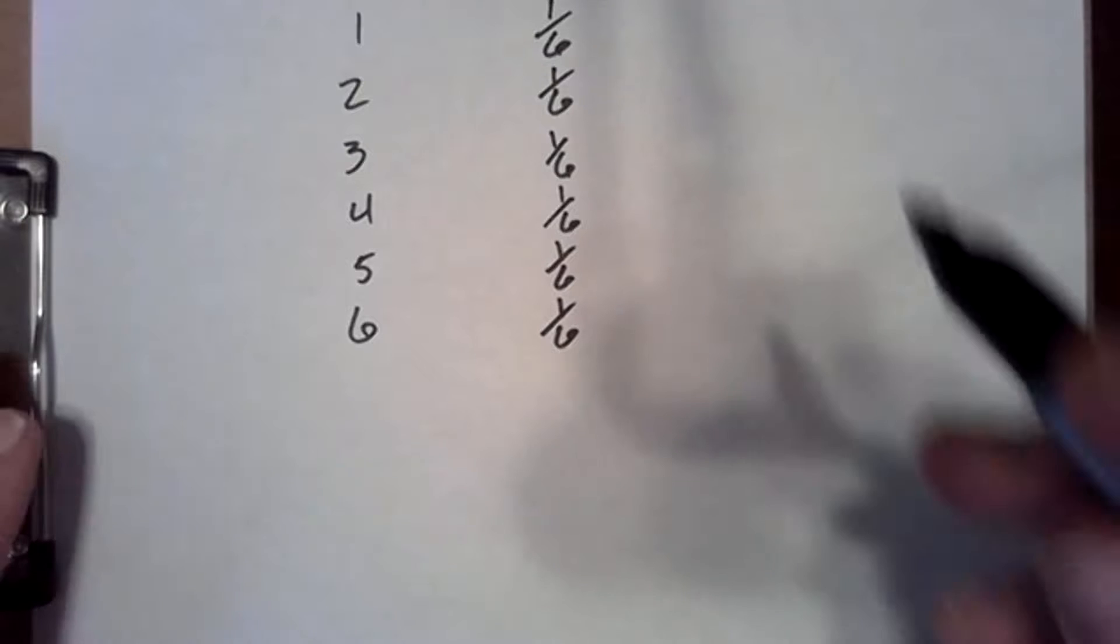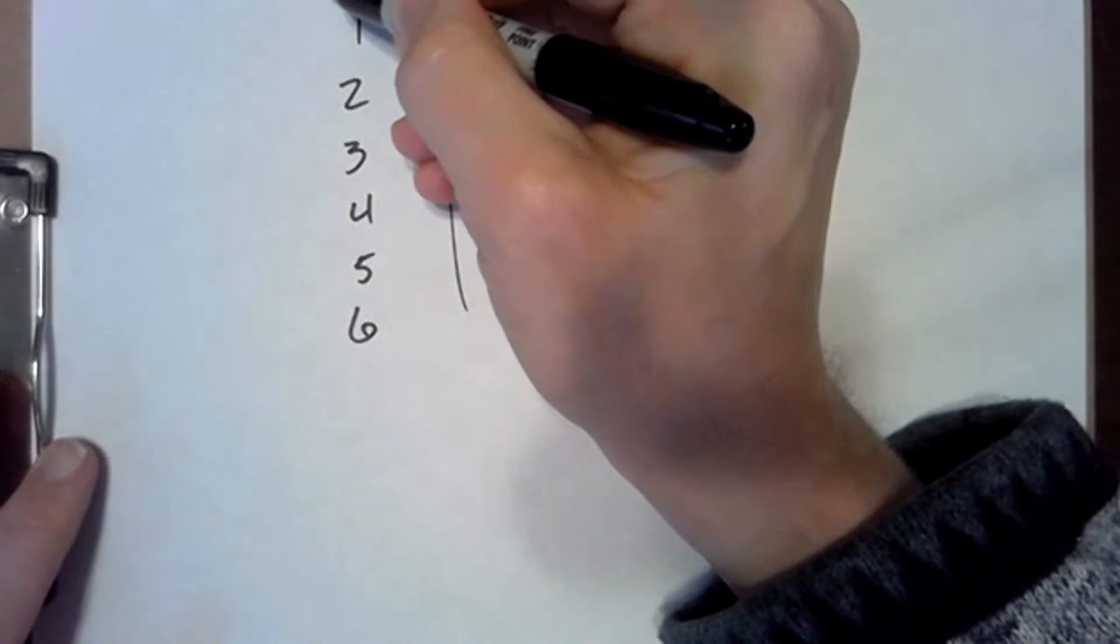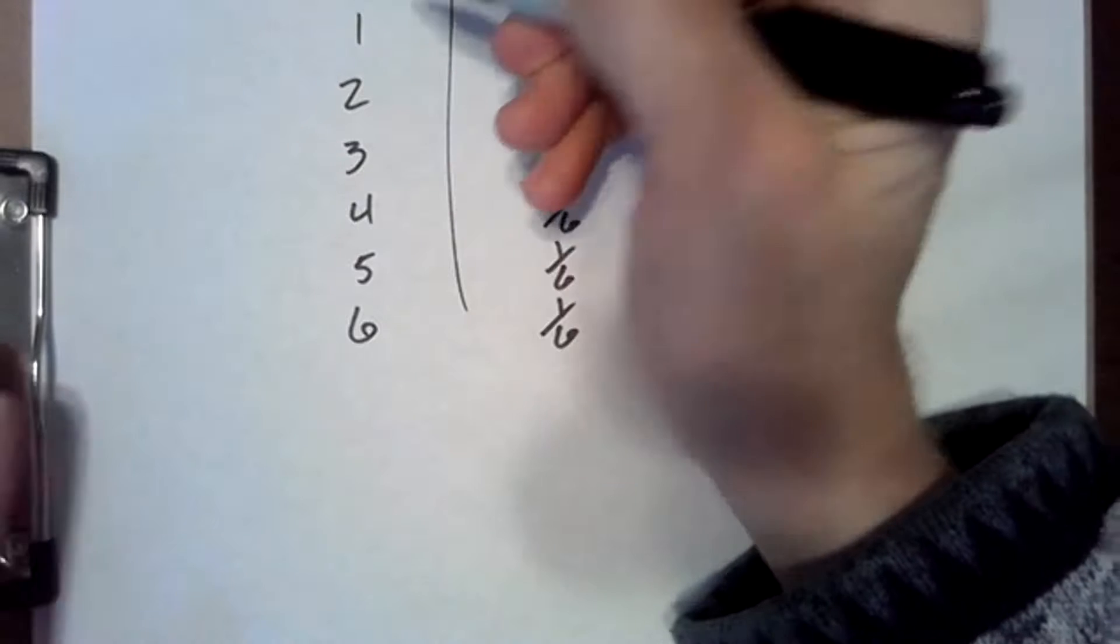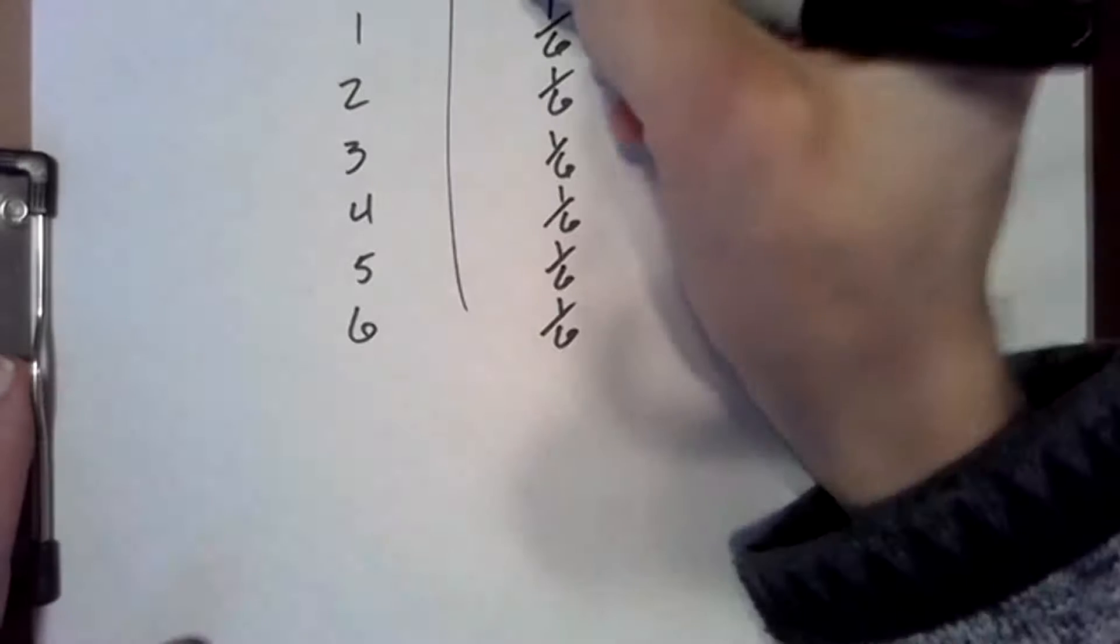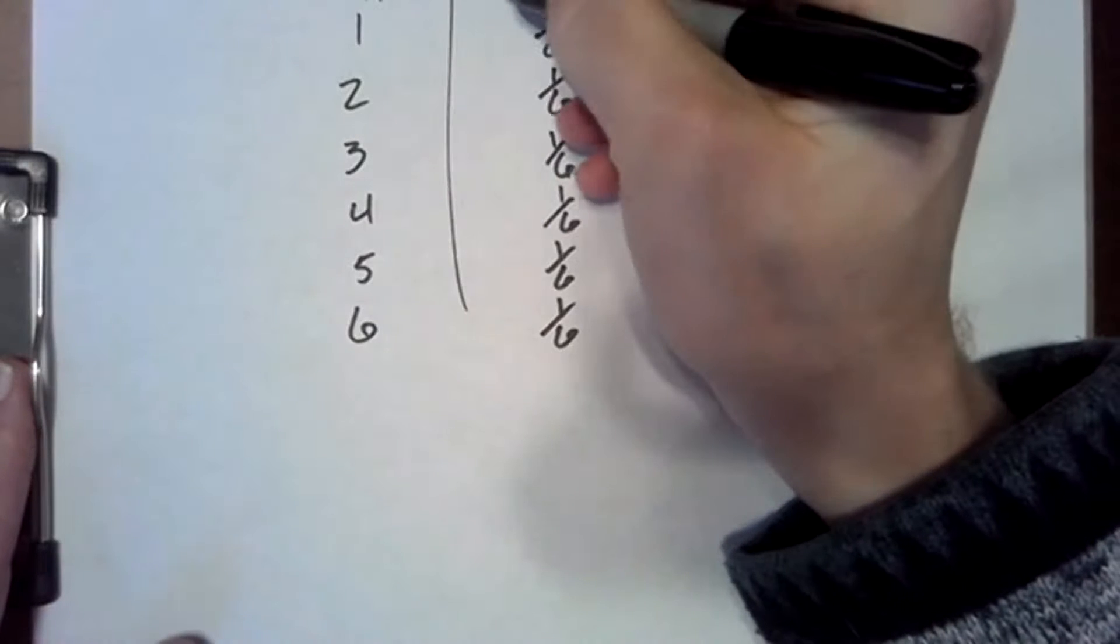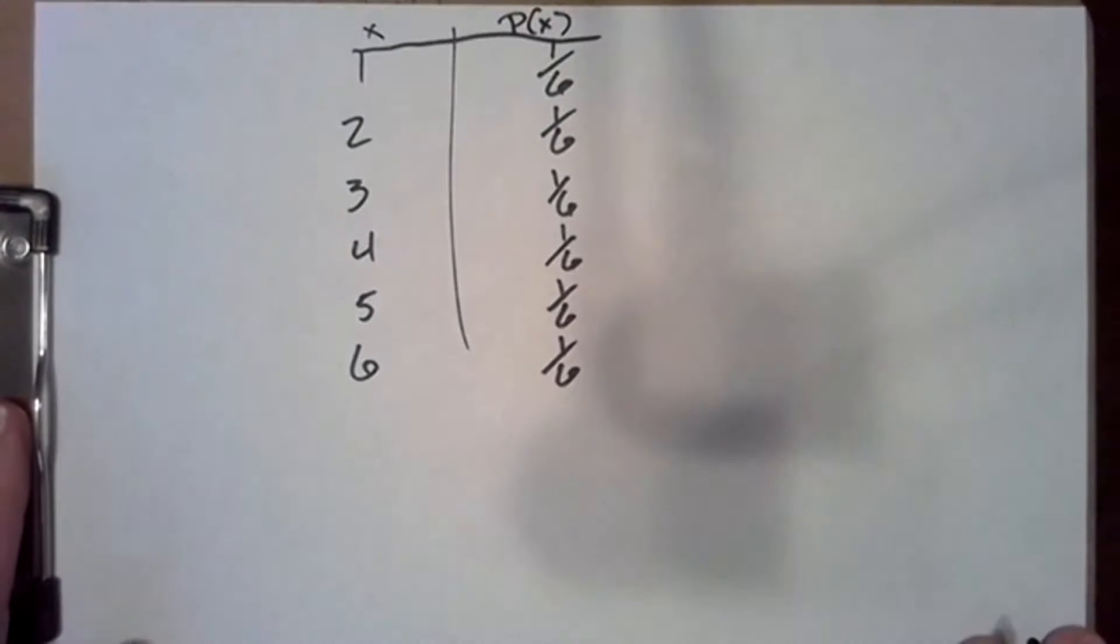So there is our probability distribution. We might draw some columns and label this. We could call this X and this is P of X, probability of X. But either way, this is approximately what we're going to see. So that was a pretty simple one.